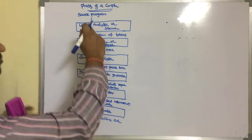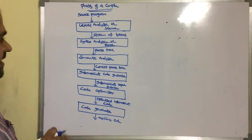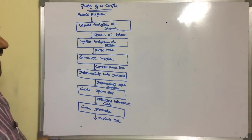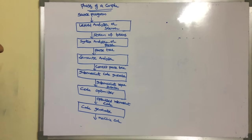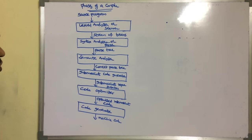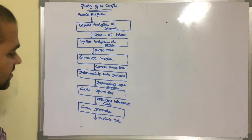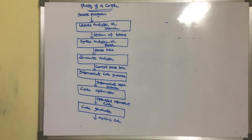So totally there are six phases: lexical analyzer or scanner, syntax analyzer or parser, semantic analyzer, intermediate code generator, code optimization, and code generator.